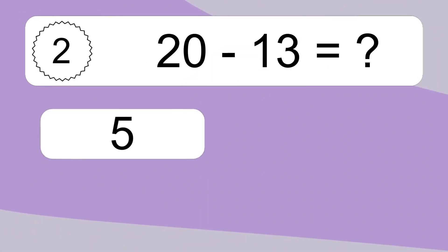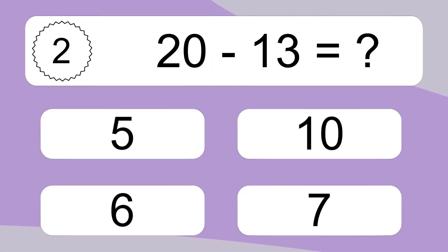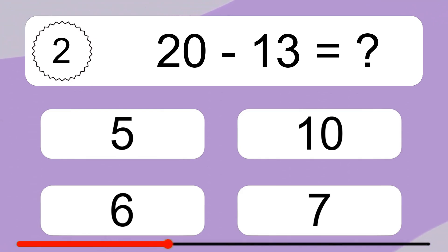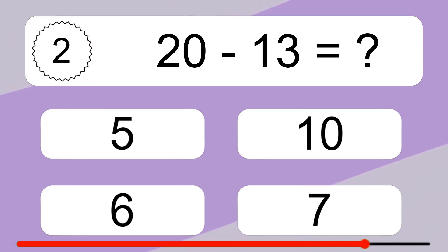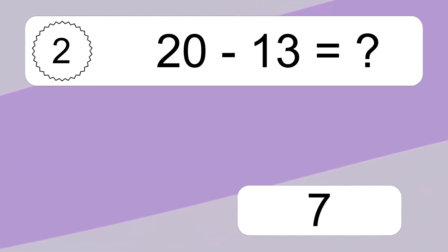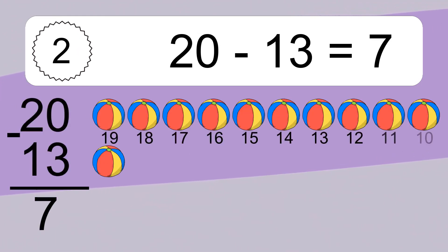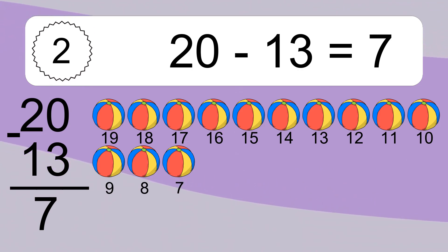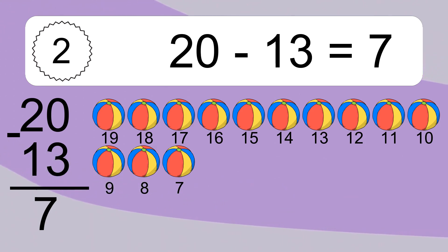20 minus 13 equals what? 20 minus 13 equals 7. Let's count it: 19, 18, 17, 16, 15, 14, 13, 12, 11, 10, 9, 8, 7.